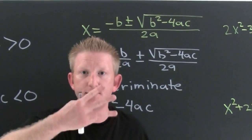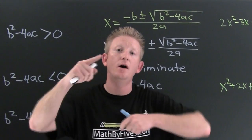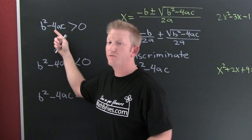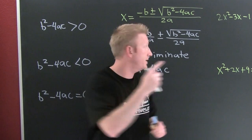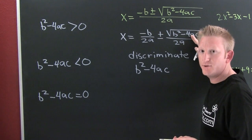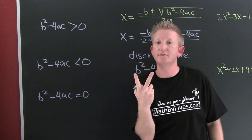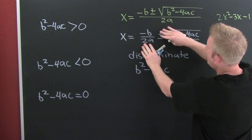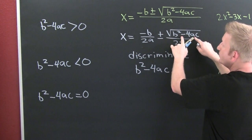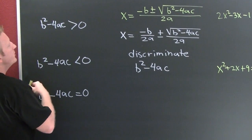Three things can happen with the discriminant: it can be bigger than zero, smaller than zero, or equal to zero. If b squared minus 4ac is bigger than zero, can you take the square root of a real positive number? Yes, and you get a real positive number. So here we're going to get two real solutions — one with the plus and one with the minus of that real number.